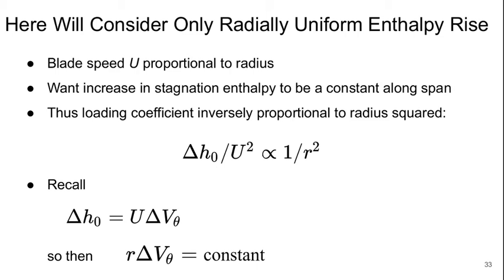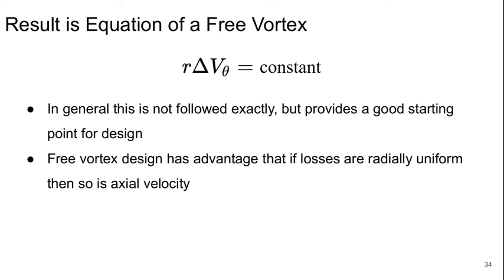Here in this course we're just going to consider a radially uniform stagnation enthalpy rise. With blade speed u being proportional to the radius, and if we want our increase in stagnation enthalpy to be a constant along the span, our loading coefficient therefore becomes inversely proportional to the radius squared. And since from the overall work equation delta H0 is u delta v theta, what we get is R times delta v theta is a constant. R times delta v theta is a constant is the equation of a free vortex, and so this is called a free vortex blade design. In general this isn't really done exactly but it provides a good starting point for design. And the free vortex design has the advantage that again if the losses are radially uniform then so is the axial velocity. So there are a lot of reasons to do this from a simplicity perspective, and typically small tweaks will be made to this to get that radially uniform stagnation pressure rise in order to maintain that uniformity of the axial velocity.